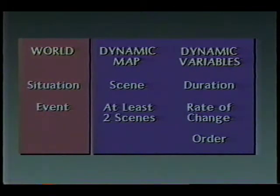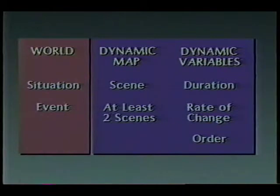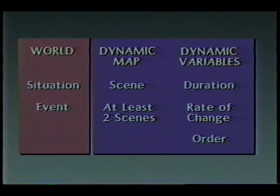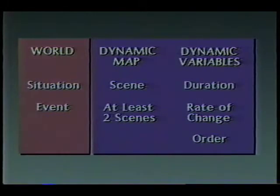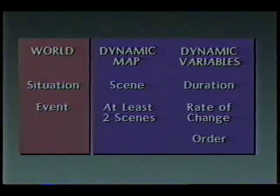We begin by distinguishing the world from the map. In the phraseology of the Swedish cartographer Janos Zegel, an instant in time in the history of the world is called a situation. The representation of a situation is called a scene in animation terms and may take the form of a static map. The dynamic variable associated with a scene is duration — the number of units of time that a scene is displayed.